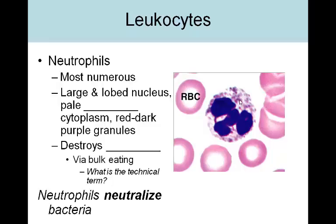Those granules are full of compounds that help the neutrophil to destroy bacteria, and that's really what neutrophils are best at. They do this via bulk eating — the technical term is phagocytosis. So neutrophils are phagocytic in nature; they basically gobble up the bacteria and that's how they get rid of them.